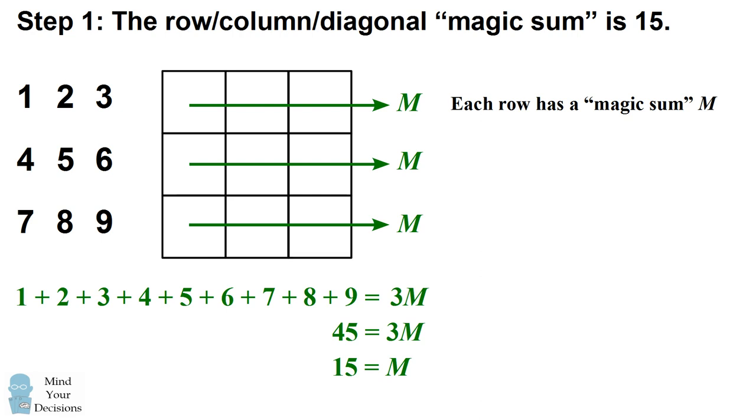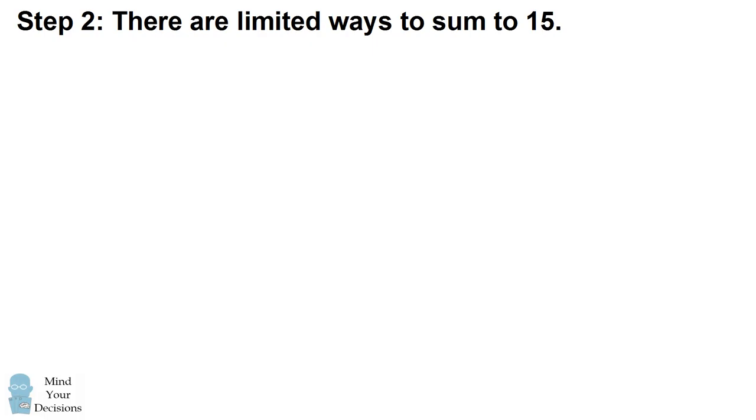So if a magic square exists, it needs to have a magic sum of 15. I did this proof using the three rows. You could similarly do that proof using the three columns. Now step 2.